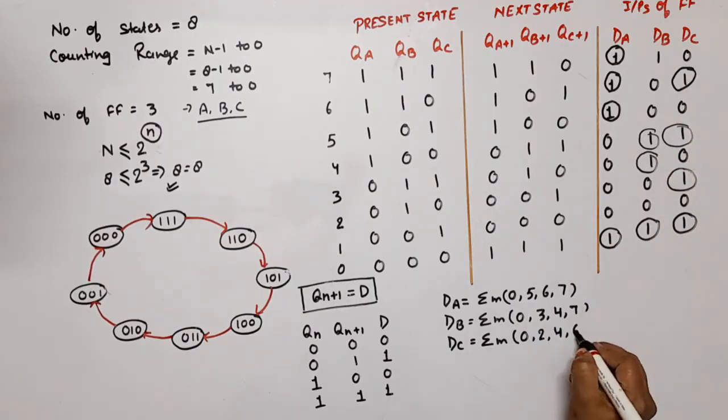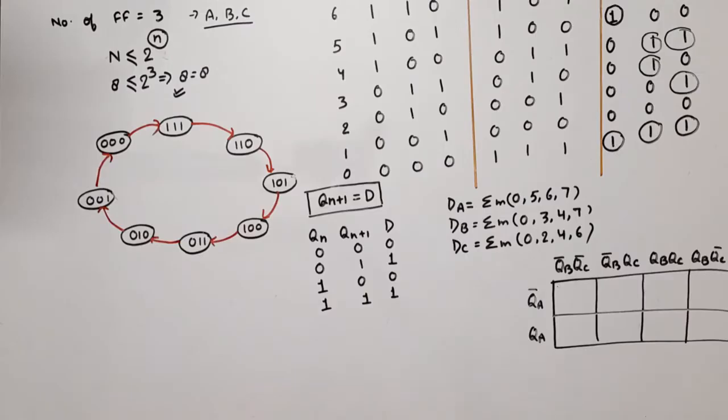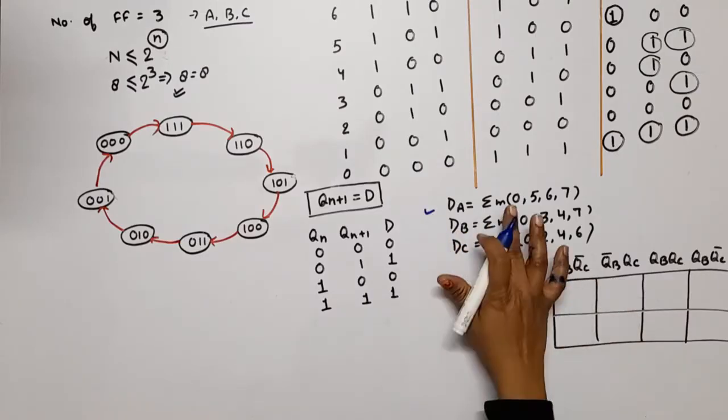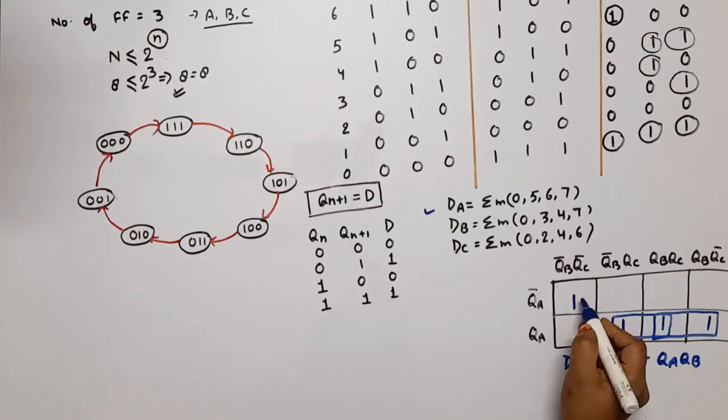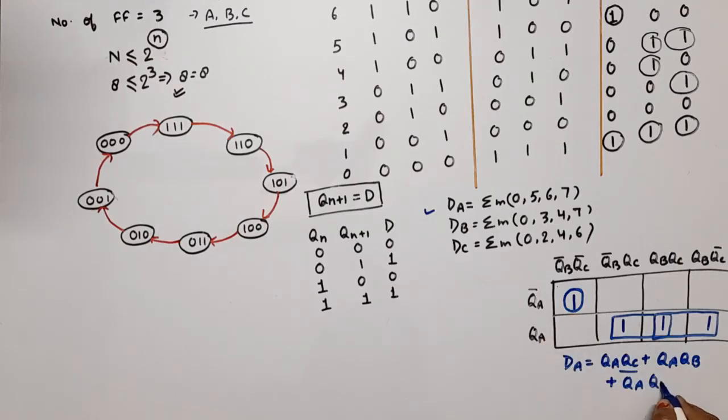Now what do we need? Three K-maps. First K-map for dA with minterms 0, 5, 6, and 7. Now let's simplify. One pair is possible. For this, dA will be equal to from this row QA, from these two columns QC plus. Now this minterm can be covered with this, pair up with this. For this QA and from these two columns QB. Now this minterm is single, plus for this QA bar QB bar and QC bar. This is the expression for dA.